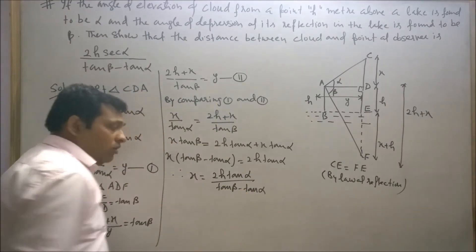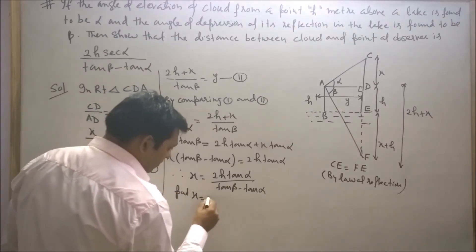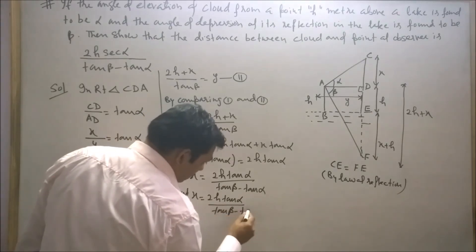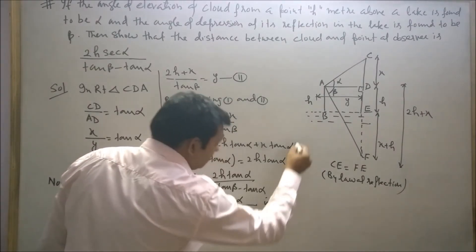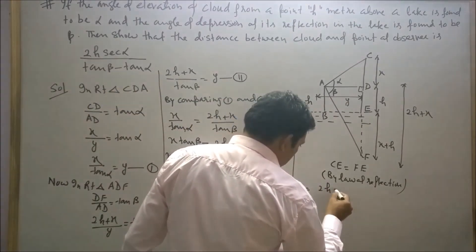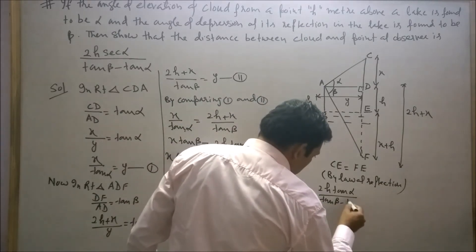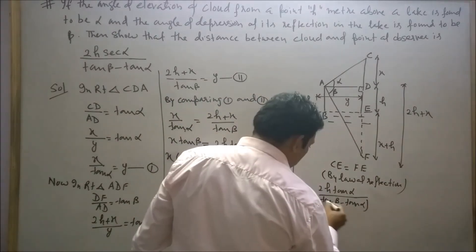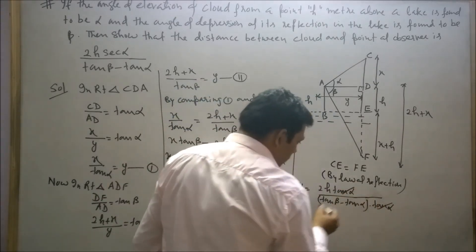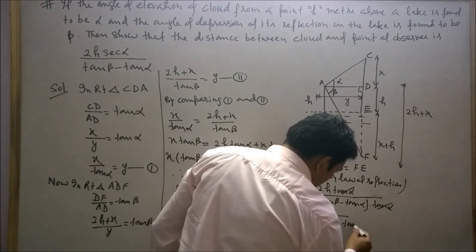Now put the value of X in equation one. Y equals X upon tan(α), so Y equals 2H·tan(α) upon (tan(β) minus tan(α)) divided by tan(α). Therefore Y equals 2H upon tan(β) minus tan(α).